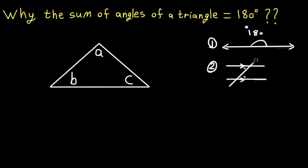If we cut the extra parts of the lines, you can see that it looks like a Z shape. The same thing applies in the opposite direction with two parallel lines.